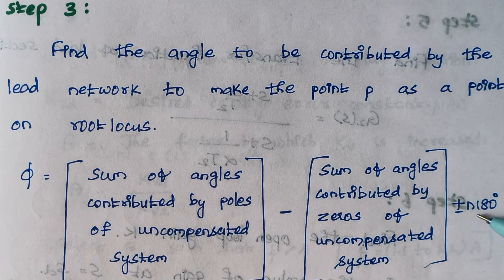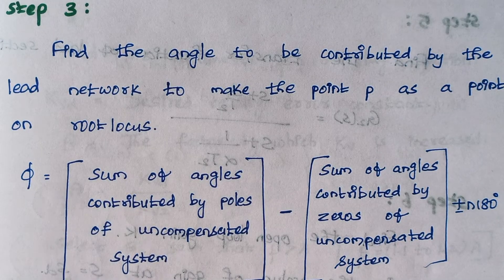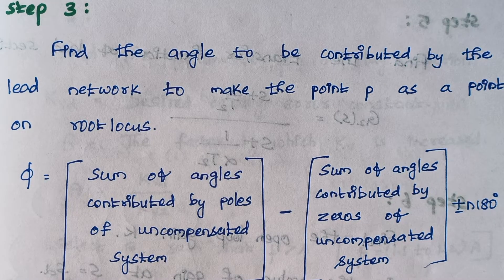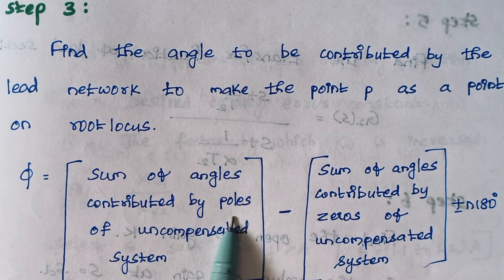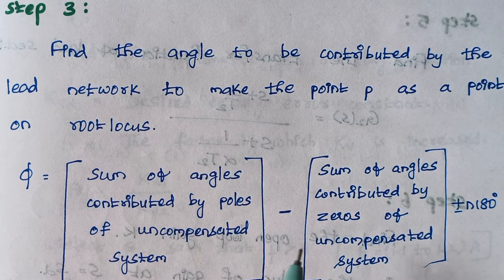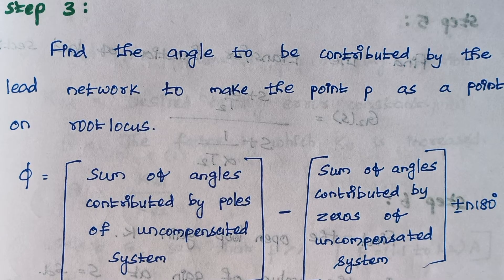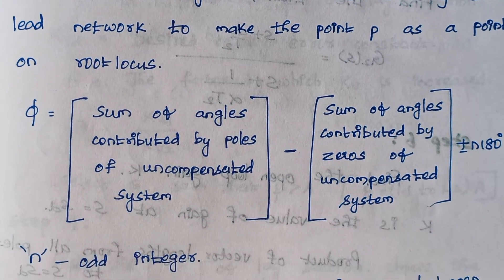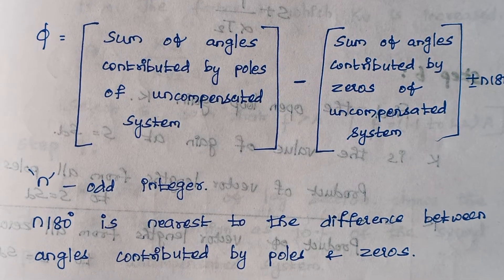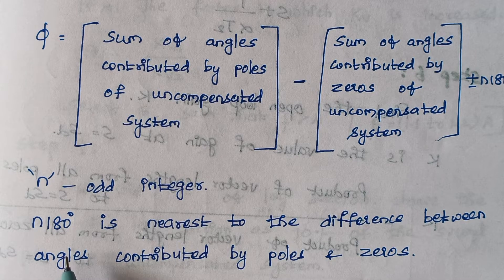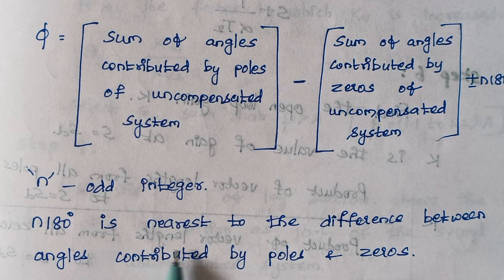Here, n is an odd integer. Pi is the angle contributed by the lead network to the dominant pole p. We first calculate the angle contributed by poles, then the angle contributed by zeros, sum them, and find the value of pi. We start with n equal to 1, selecting n such that n times 180 degrees is nearest to the difference between the angles contributed by poles and zeros.